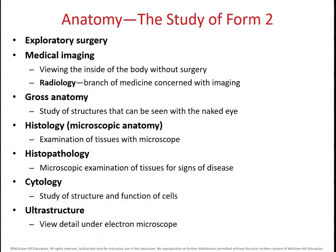Some other ways that we can study anatomy are exploratory surgery, which is usually done as a last resort. If a person is experiencing lots of unexplained pain or other symptoms after all other tests are done and found to be negative or inconclusive, exploratory surgery may be considered as a last option. Medical imaging is a much better option — it allows us to look inside the body without doing invasive surgeries, and we're going to be talking a lot more about this later in Chapter 1. Radiology is the specific branch of medicine concerned with all types of imaging. Gross anatomy is simply what we can see with the naked eye, without microscopes or any equipment to see inside the body.